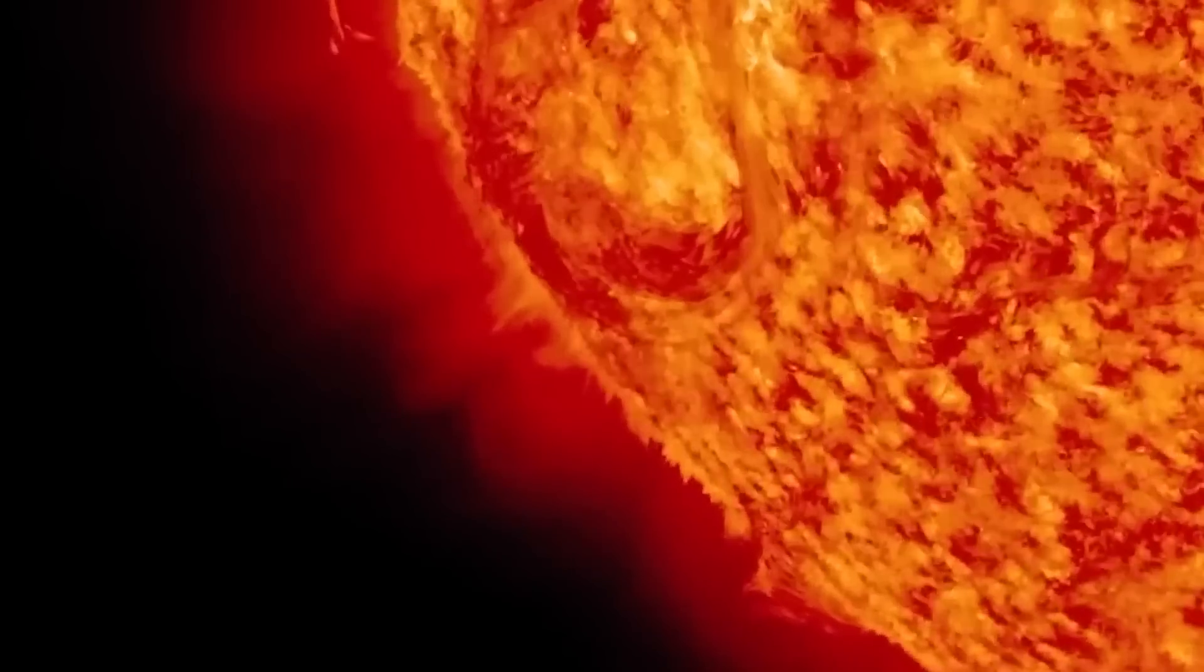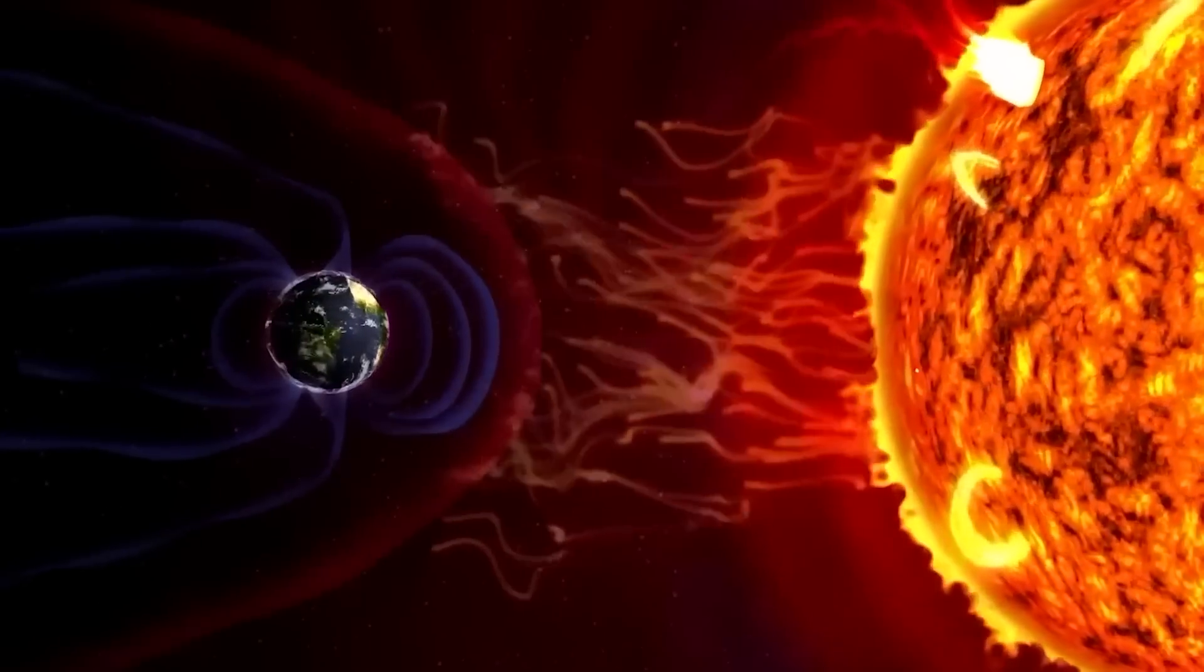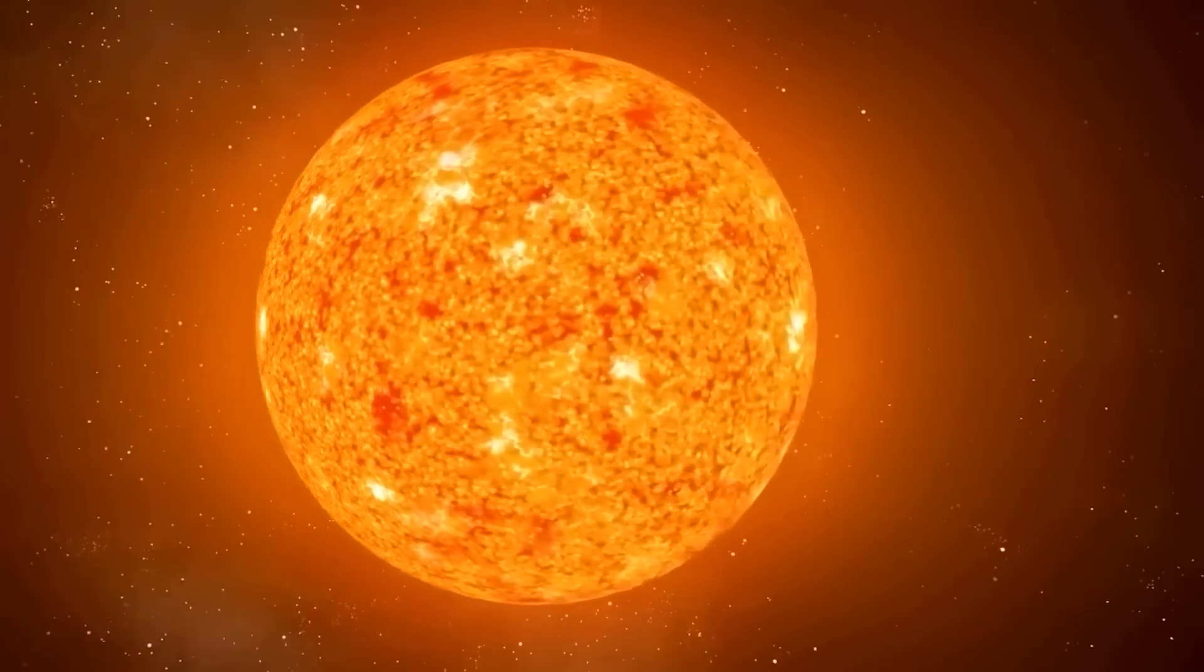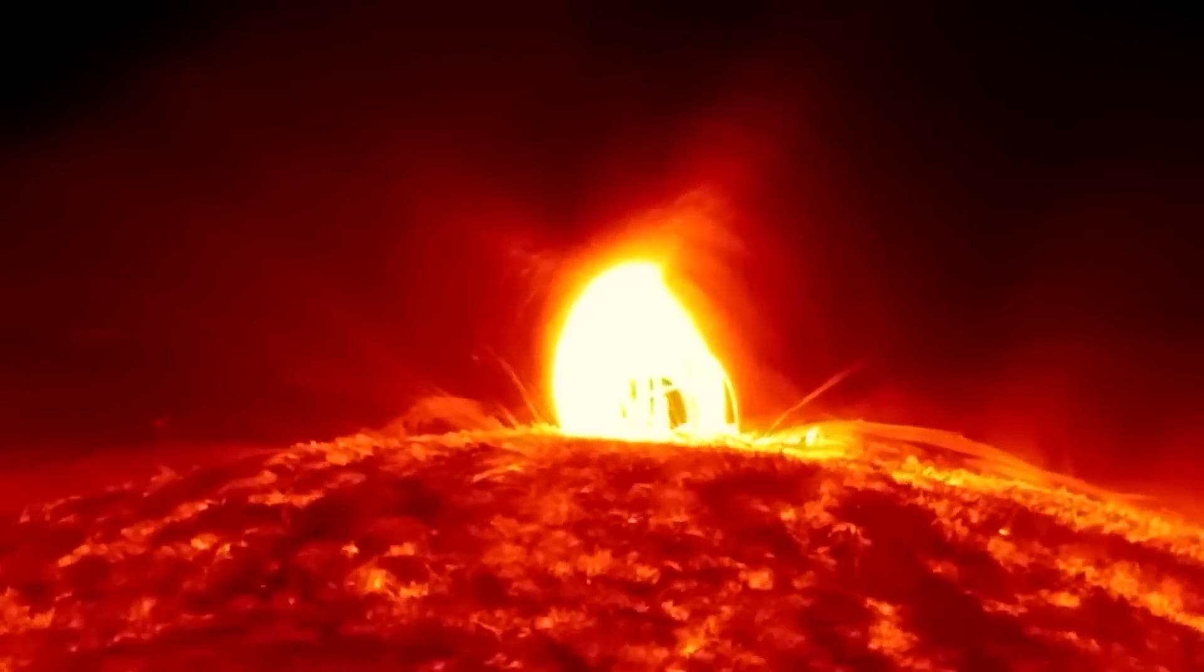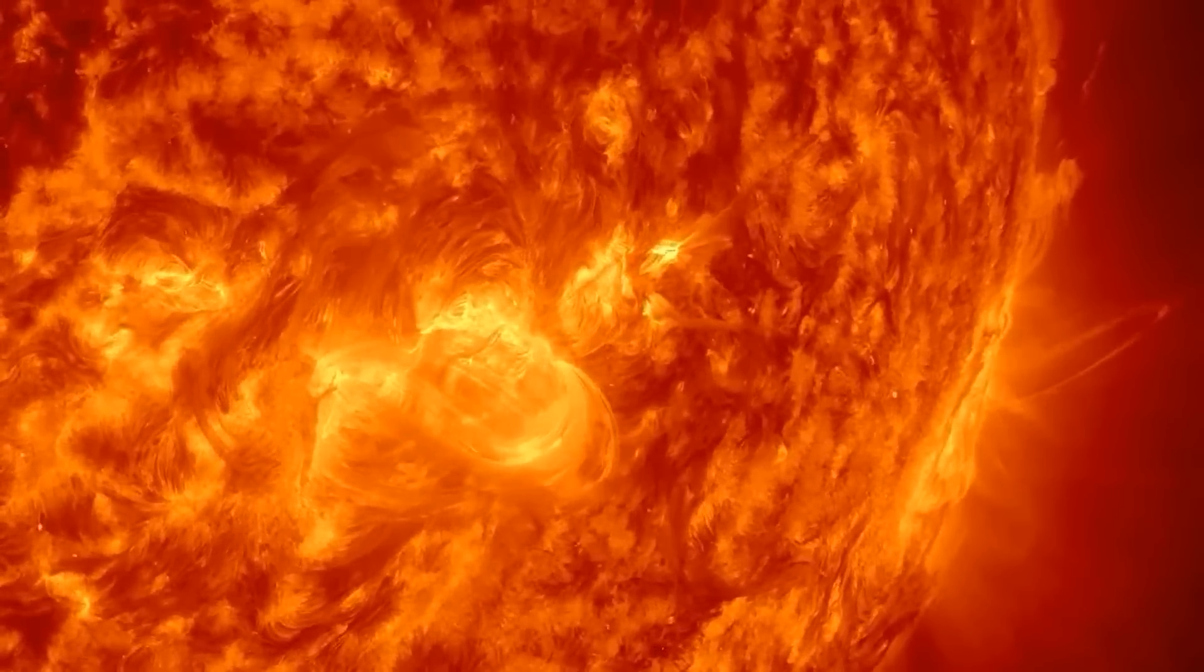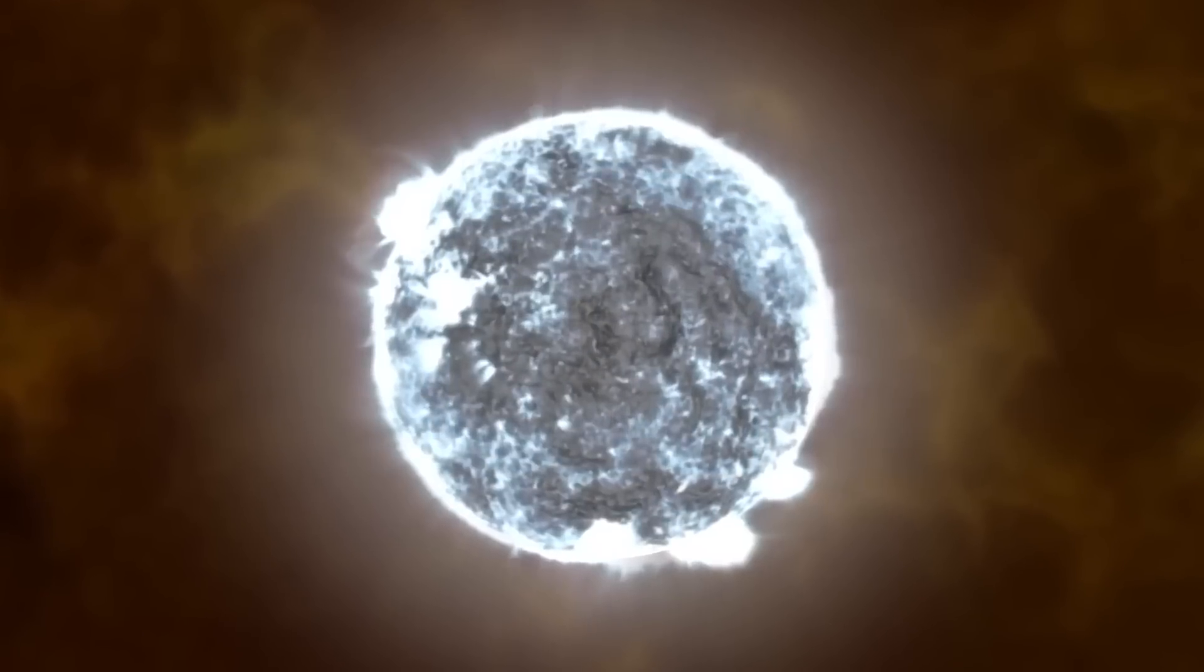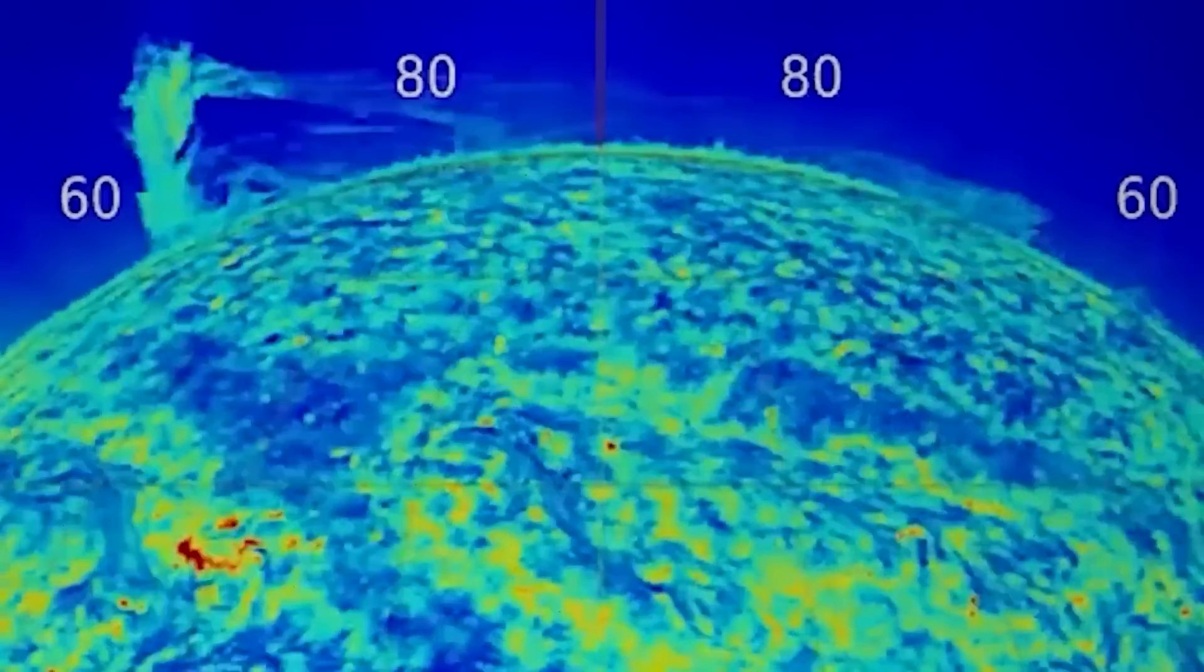Type 1 supernovae occur when white dwarf stars reach the end of their lives, and this is more common in star systems where two stars are very close to each other. As the gas from the companion star builds up on the white dwarf, it gets squeezed and triggers a powerful nuclear reaction inside, leading to a massive explosion known as a supernova. Astronomers use type 1 supernovae, also called standard candles, to measure distances in space because they are believed to shine with the same level of brightness at their peak.